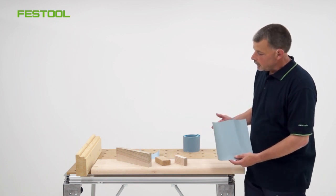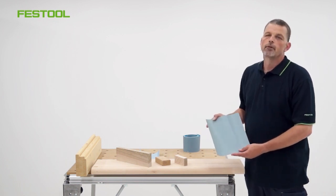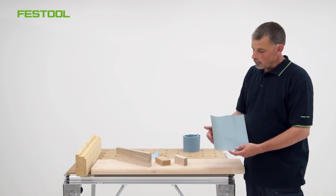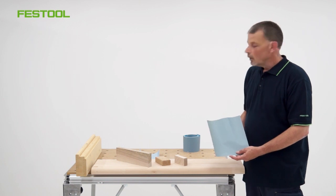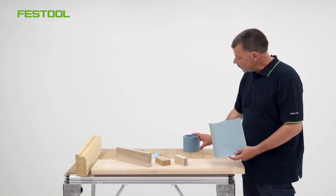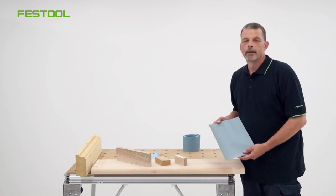With these Granat sheets they're available from 40 grit to 400 grit and are 280 millimeters by 230 millimeters in width. With the rolls, these are 150 millimeters in width and 25 meters in length.